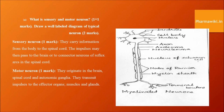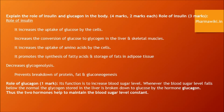Role of insulin and glucagon. Insulin increases the uptake of glucose by cells and increases the conversion of glucose to glycogen in the liver and skeletal muscle. Insulin also increases the uptake of amino acids by cells and promotes the synthesis of fatty acids to store fats in adipose tissue. Glucagon functions to increase blood sugar level. Whenever blood sugar level falls below normal, glycogen stored in the liver is broken down to glucose by glucagon. Thus, insulin and glucagon together help to maintain a constant blood sugar level.